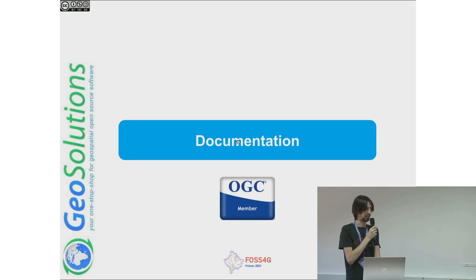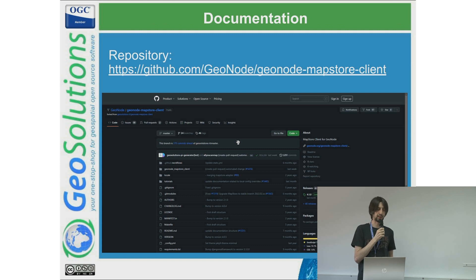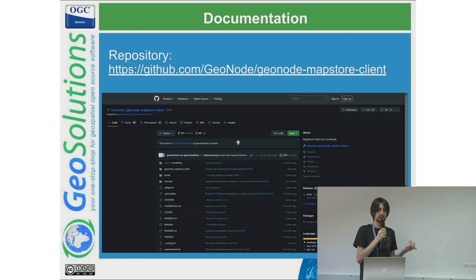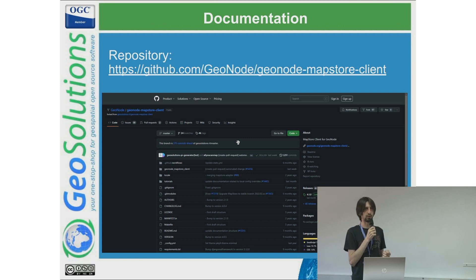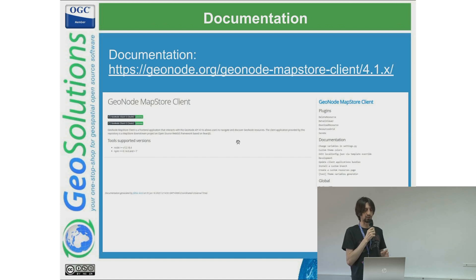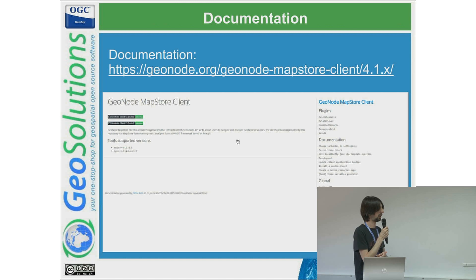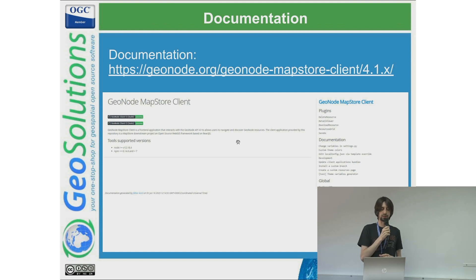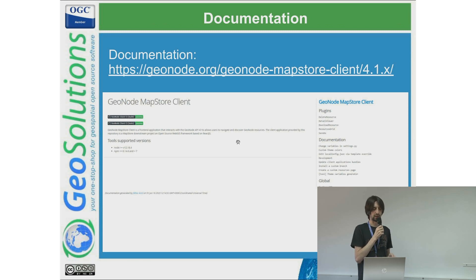In this last part of the presentation I want to share some documentation links. First, the repository — it's an open source project so everything can be found there, including links to internal documentation. From version 4.1 we are including JSDoc and compiling every comment we made, so there is configuration for plugins, what a user can do and modify, and tutorials for common requested changes. You can also find the theming tool I showed before and how to customize some pages.